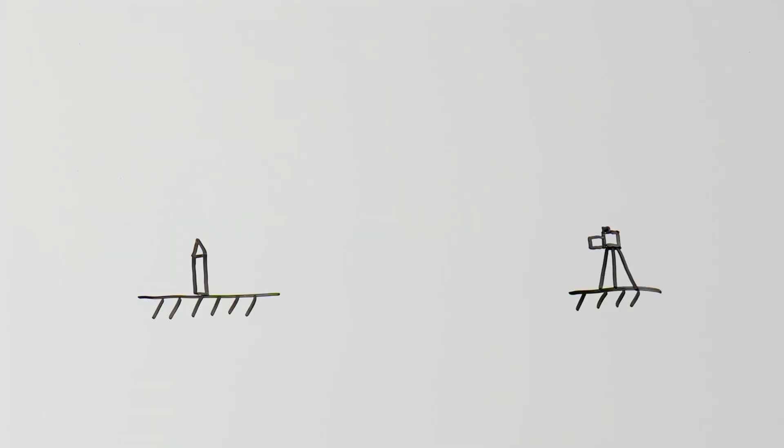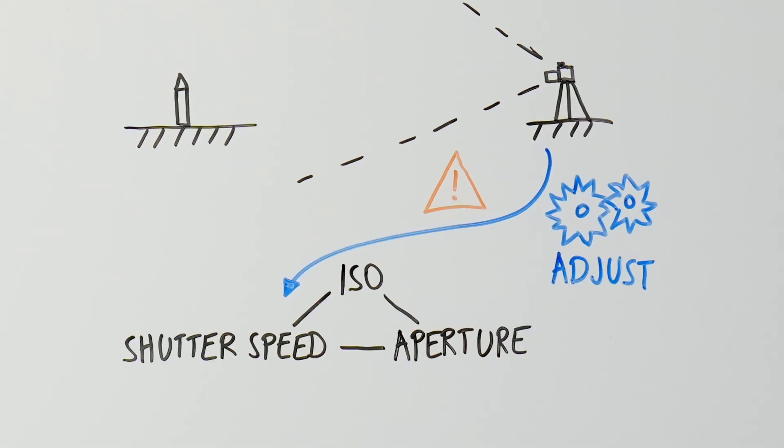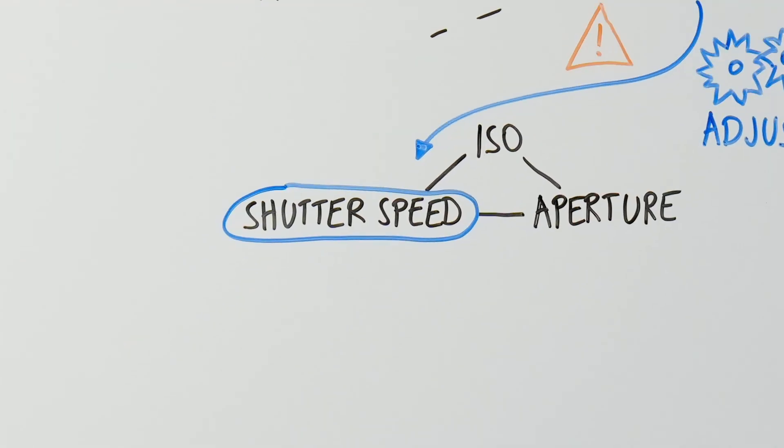Meanwhile, we knew that getting the shot right would be just as challenging as the launch itself. We had to manually adjust the camera settings to capture the shot. One key setting, the shutter speed, had to be perfectly balanced.